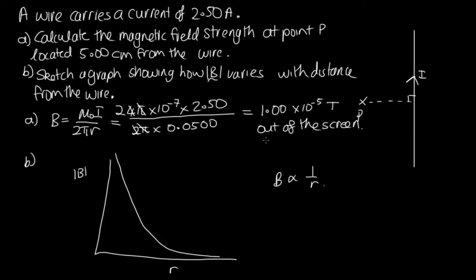And let's just put on the one that we've calculated here. This is 1 times 10 to the minus 5. This is in teslas. And this is at 0.05 when this is in meters. So there, we've sketched a graph showing how the magnetic field strength varies with the distance from the wire.